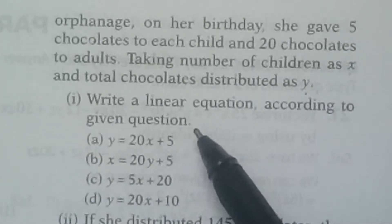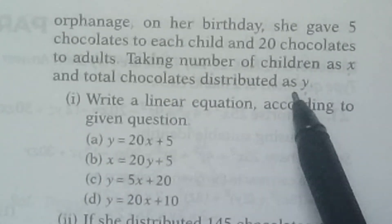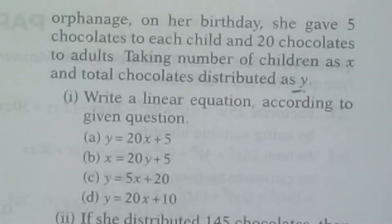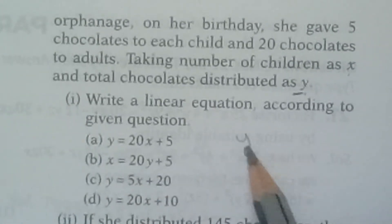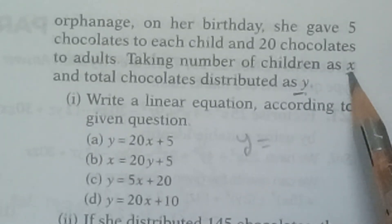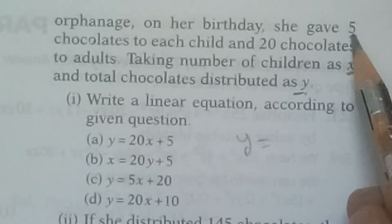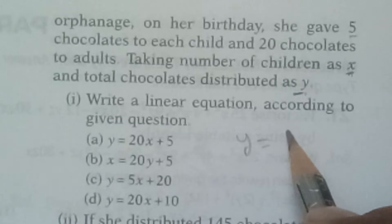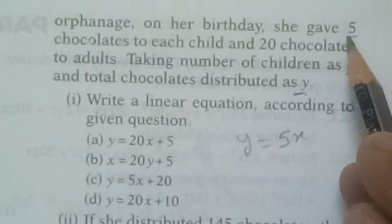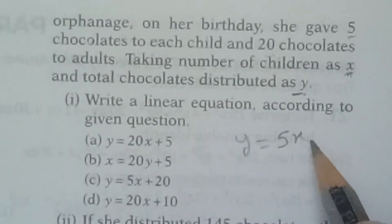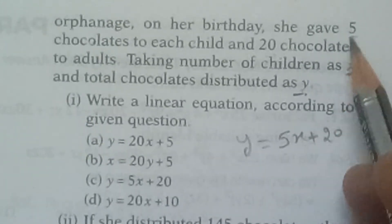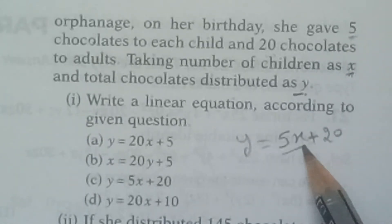Y is the total number of chocolates distributed and X is the number of children. Since 5 chocolates are given to each child, the chocolate given to children is 5X. And 20 chocolates are given to adults. So the equation becomes Y equals 5X plus 20.